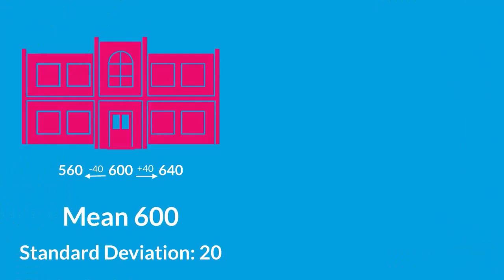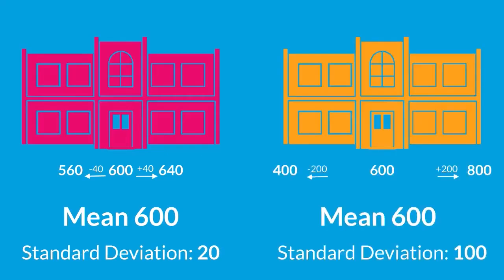Take, for example, one school that has a mean of 600 and a standard deviation of 20 for a grade level, while another school in the district for the same grade also has a mean of 600, but a standard deviation of 100. On the surface, these schools might look like they're performing similarly because they have the same mean, but the spread of the scores is completely different.